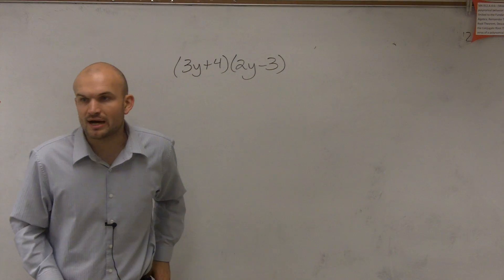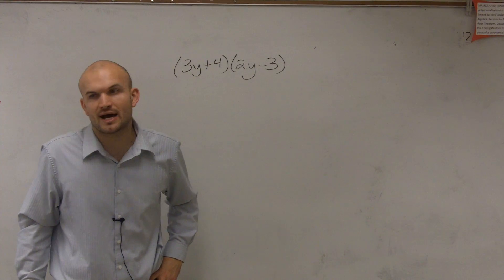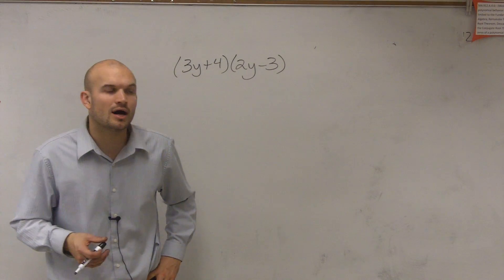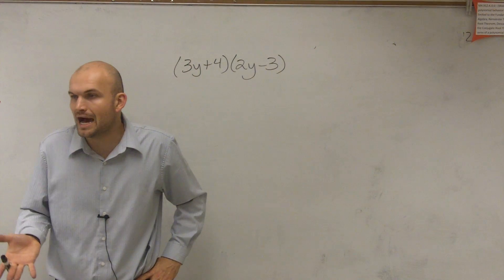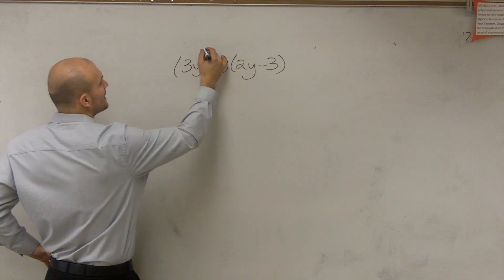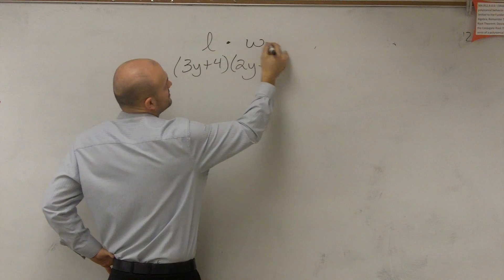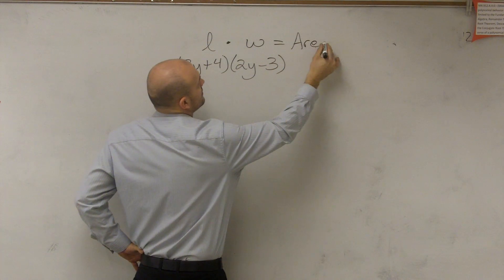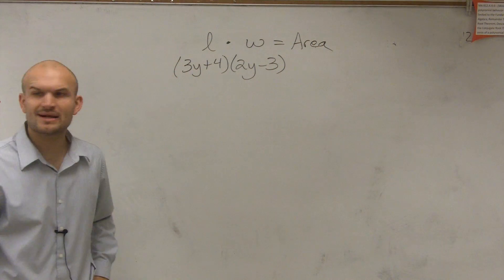So ladies and gentlemen, when multiplying two binomials times each other, one thing I want you to recognize is one of the most common multiplication formulas. And what that common multiplication formula is: length times width equals the area of a rectangle, correct?